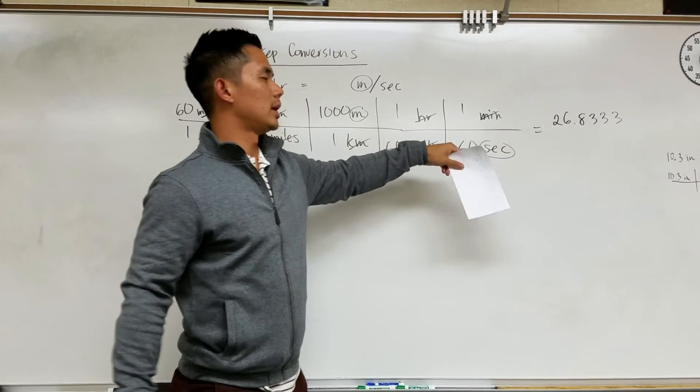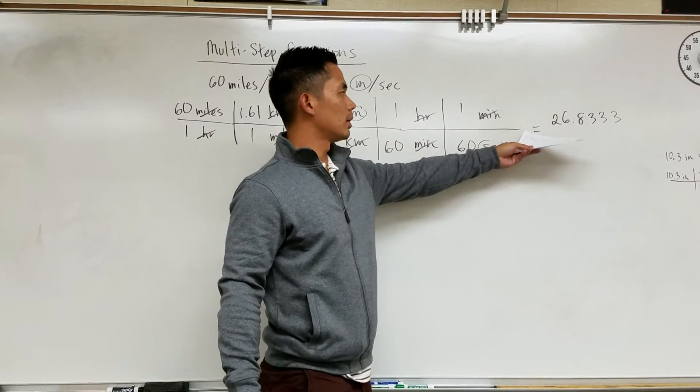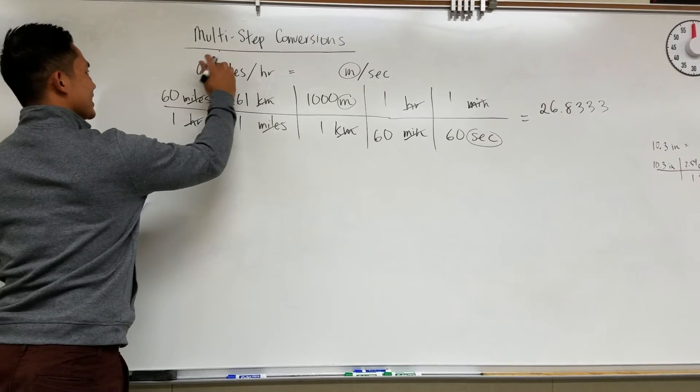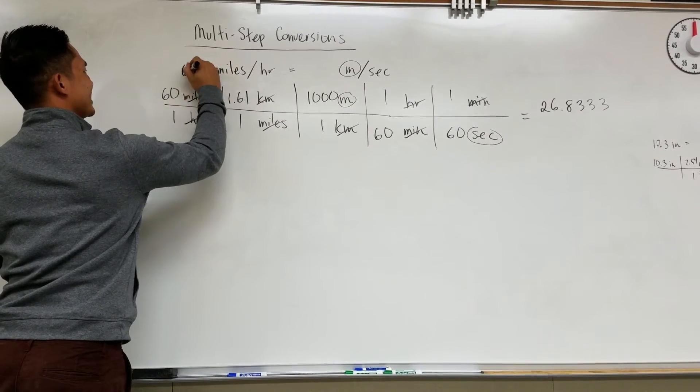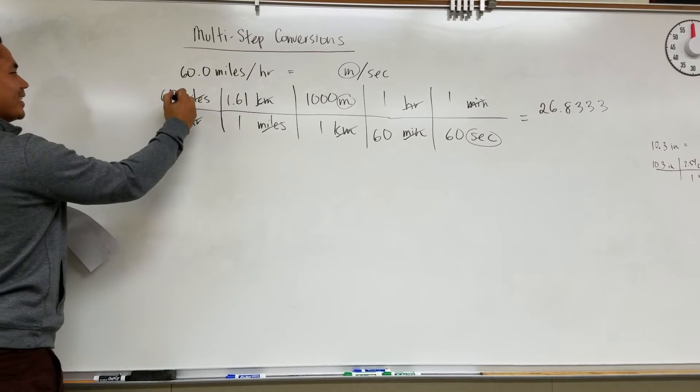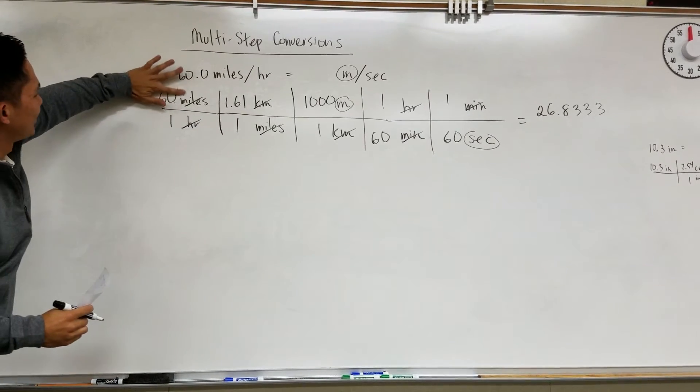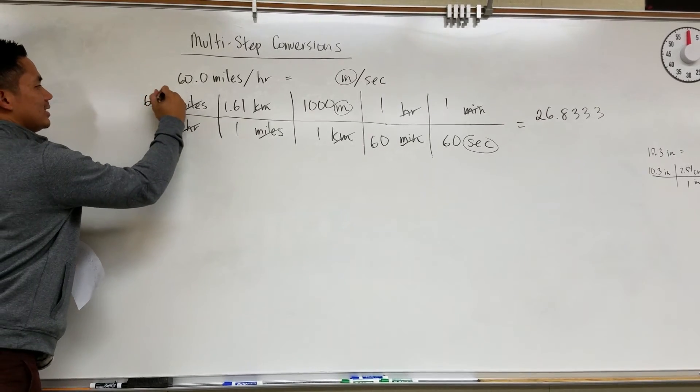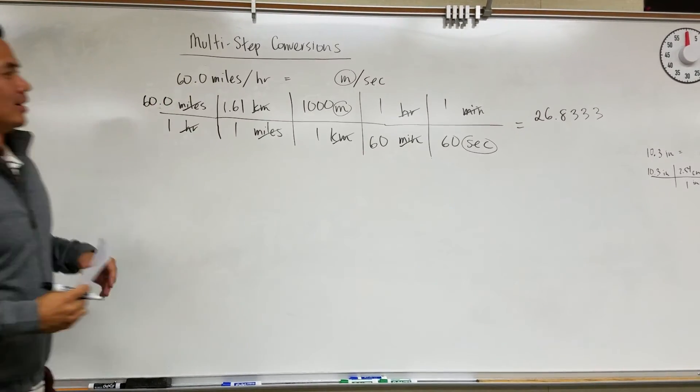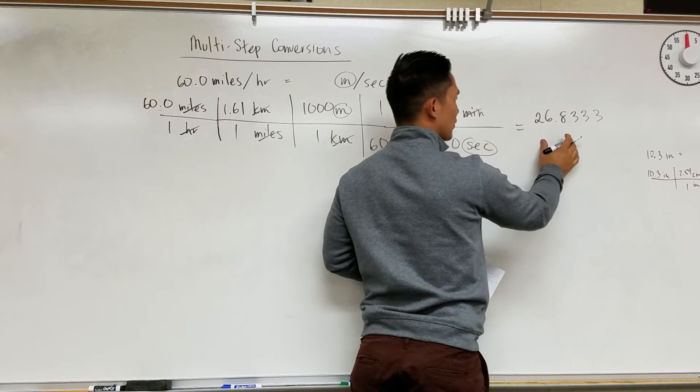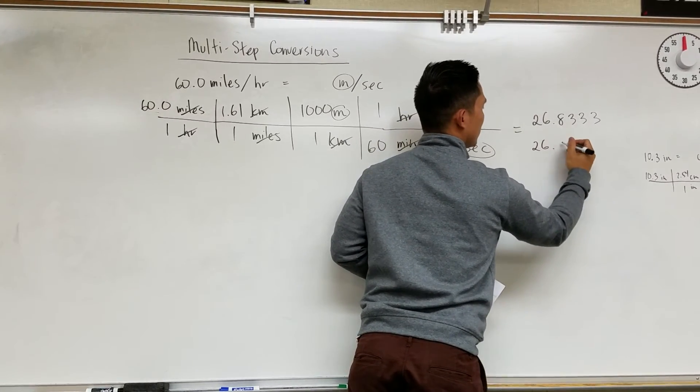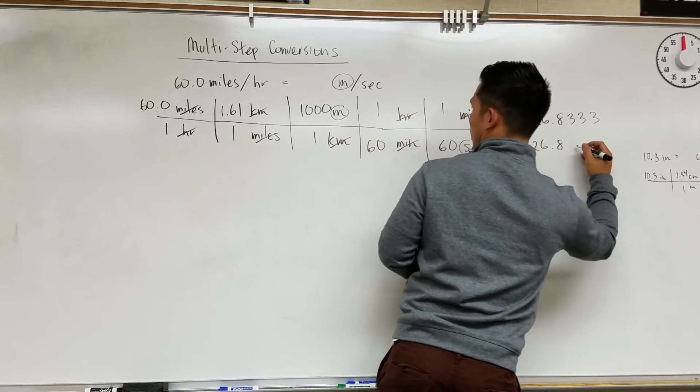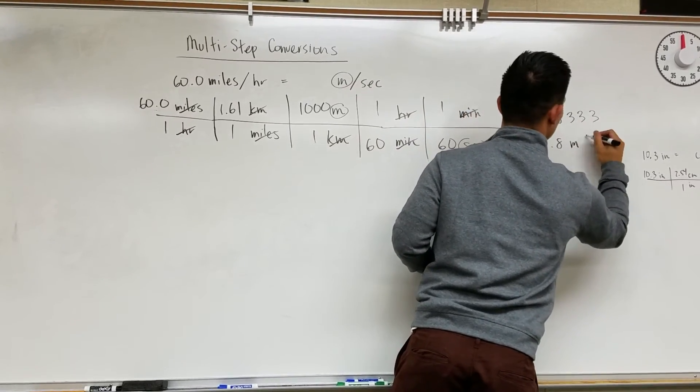That is the answer from the calculator. Of course, this is 60.0. Right? Let's make this 3 sig figs here, so that it is easier to work with. So 60.0. So we want our answer in 3 sig figs. 26.8. The 3 keeps it the same.